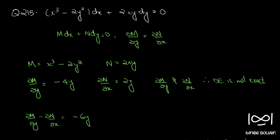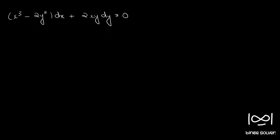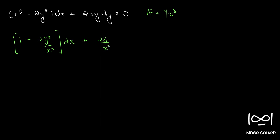Now we will multiply the integrating factor with the given differential equation. Our integrating factor is 1 by x³, so multiplying through gives: (1 minus 2y²/x³) dx plus (2y/x²) dy equal to 0. This is our new M and this is our new N.